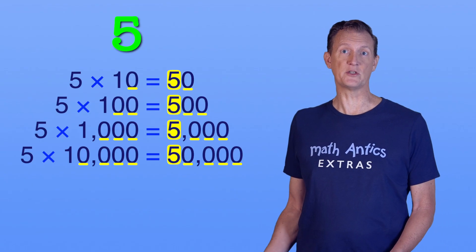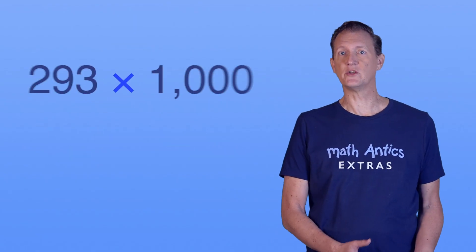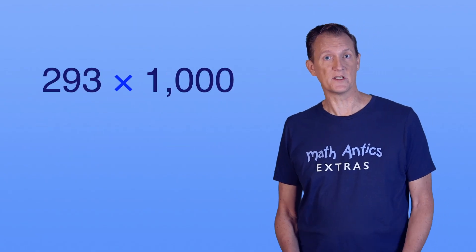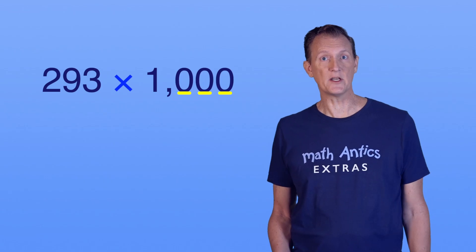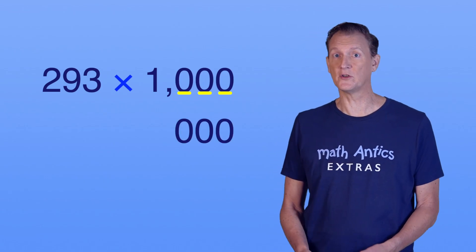This works for multi-digit numbers too. Let's say you want to multiply 293 by 1000. Since 1000 is the power of 10, and it has 3 zeros, you stick 3 zeros onto the right of 293.